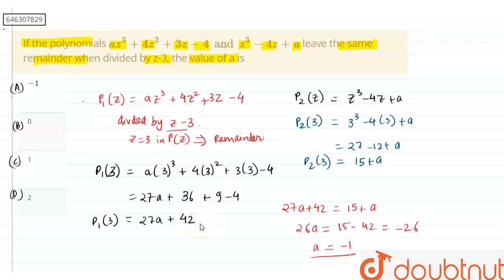Oh sorry, I have done some mistake here. This is not 42 but this is 41, and this will also be 41. And now this will turn out to be -26 and a = -1. So our answer is -1.